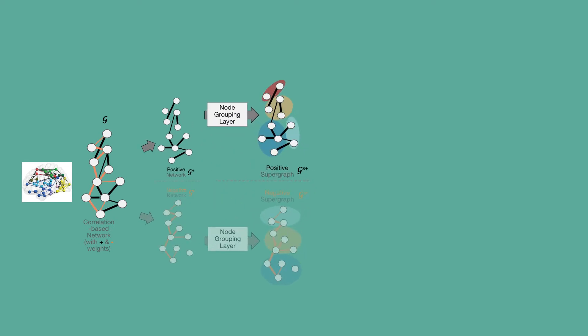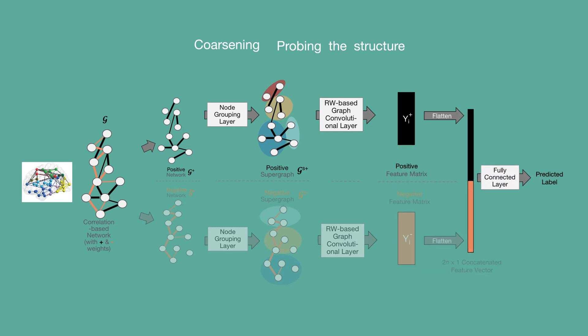These branches process the positive and negative connections within the functional graphs, respectively. Each branch features a node grouping layer and three random-walk-based graph convolutional layers.